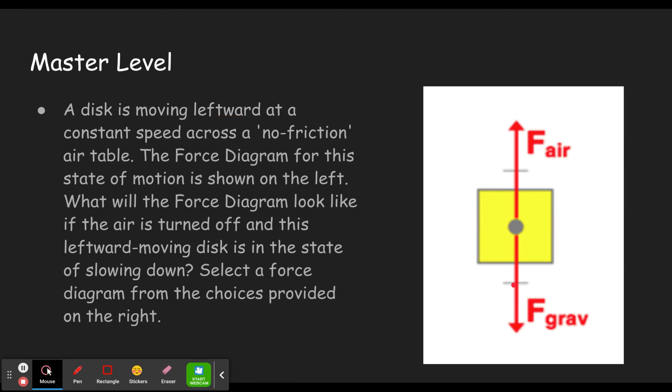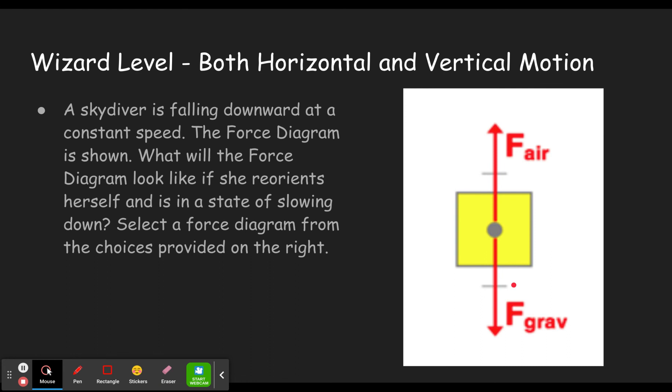All right. Let's move on to the wizard level. So the wizard level has all the ones from the master again. It's just got some new ones in it. A skydiver is falling downward. It's always important to recognize what direction this is moving. So our velocity is down at a constant speed. So notice it's at a constant speed. That means all of our forces are balanced, which we see in the picture here.